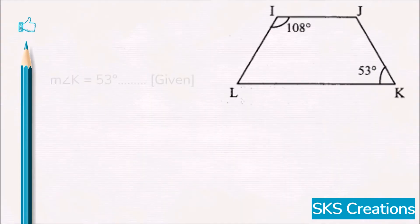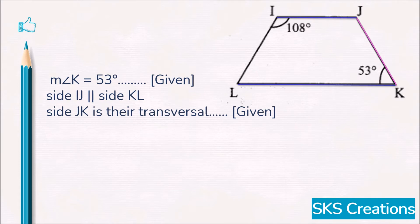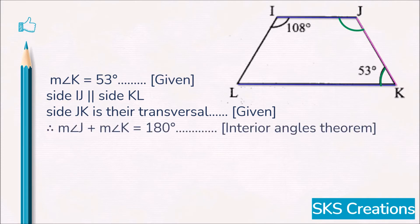Now, angle K is 53 degrees. In this figure, side IJ and side LK are parallel to each other, and JK is a transversal. So we consider IJ parallel to KL with JK as a transversal. Angle J and angle K are interior angles formed by those two parallel lines, and interior angles formed by parallel lines are supplementary.